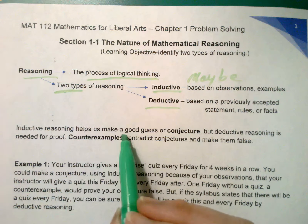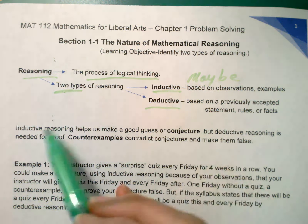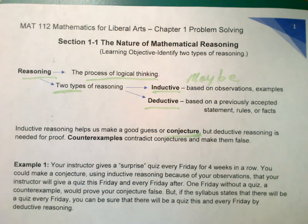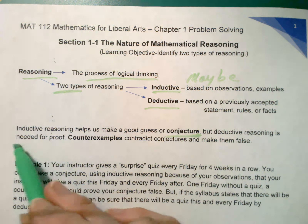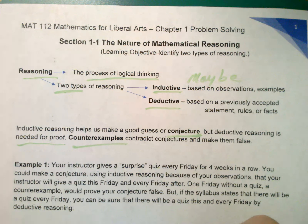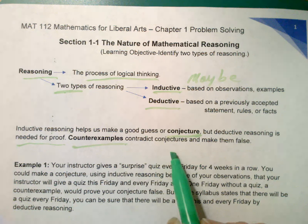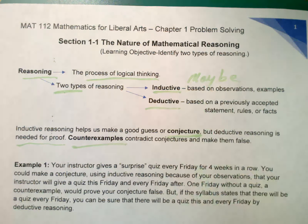Inductive reasoning helps us make good guesses — we're still guessing because it's a maybe for inductive. These good guesses are called conjectures. We're going to guess what's going to happen. But deductive reasoning is needed for proof. The minute you have an example which proves it's not going to happen the way you're guessing, counter-examples contradict conjectures and make them false, because that maybe is always lurking around the corner.